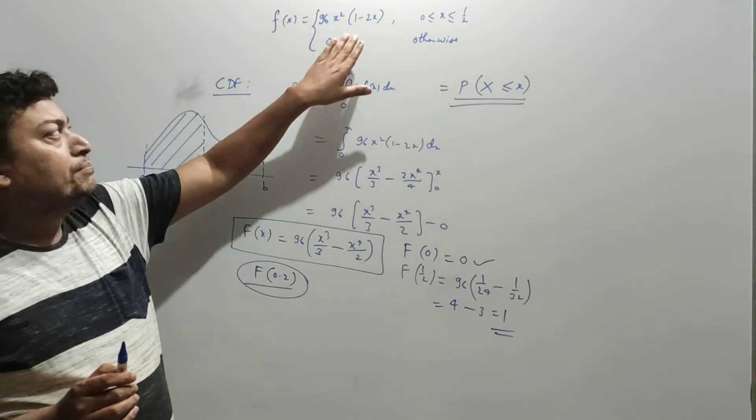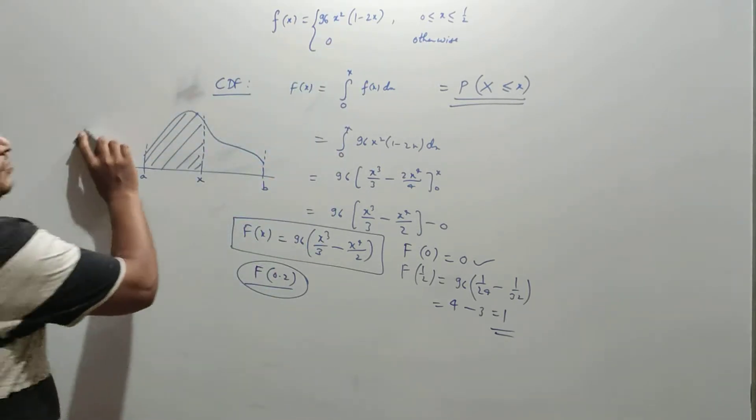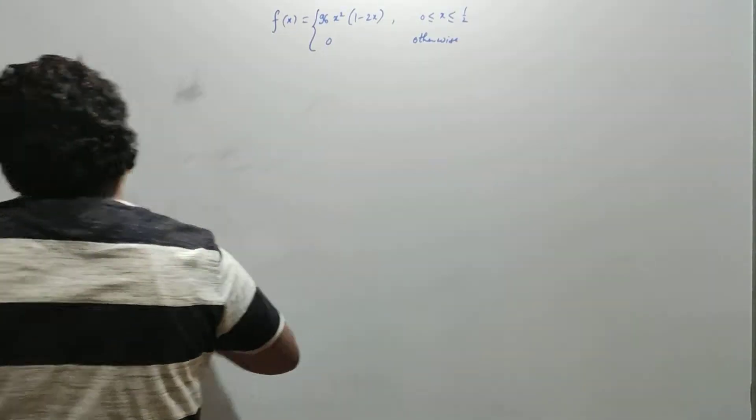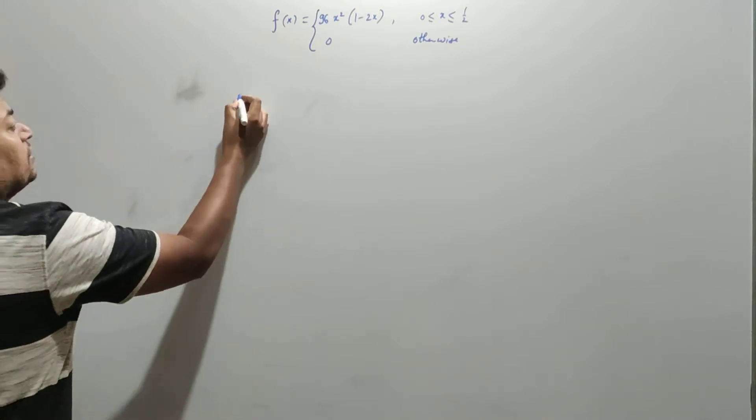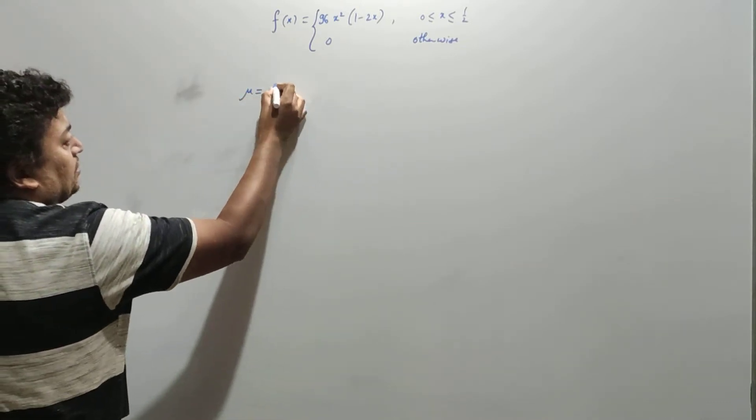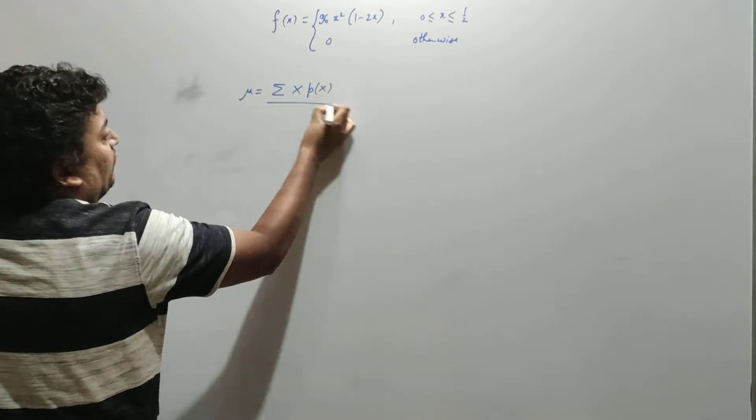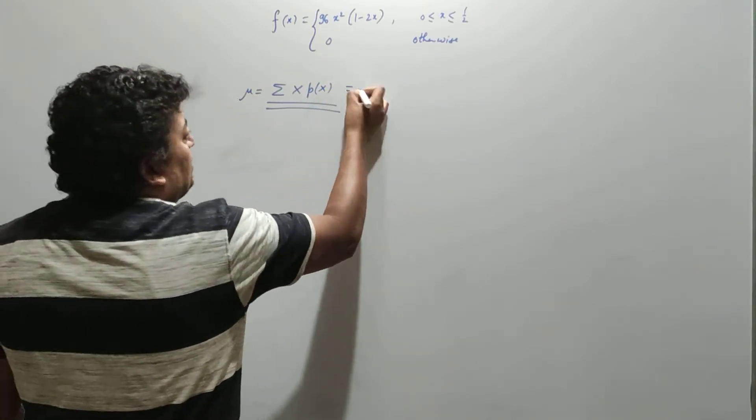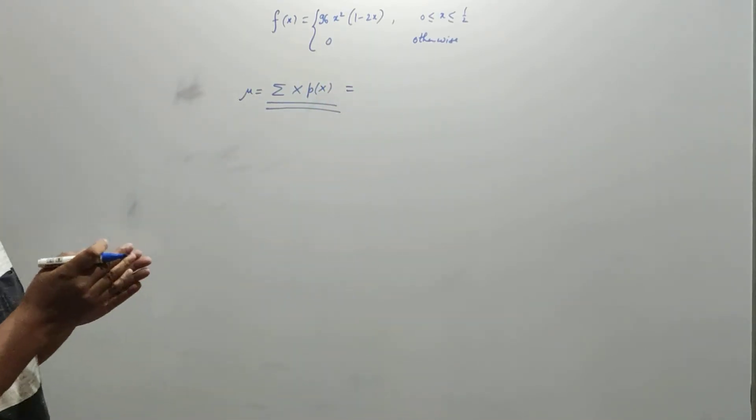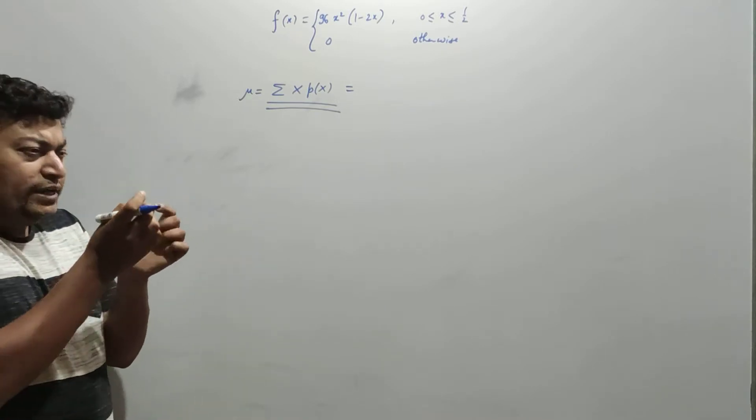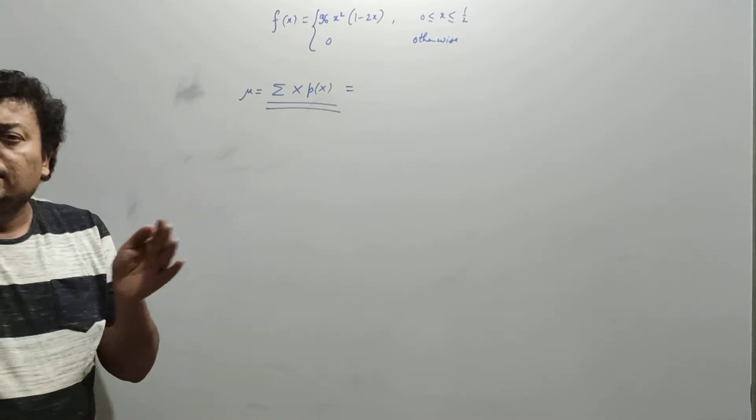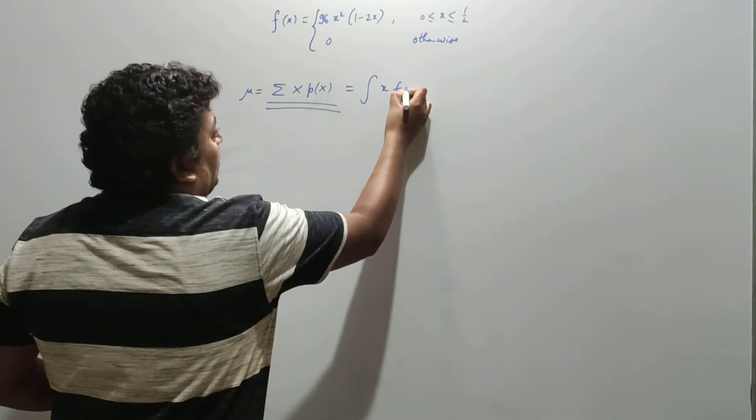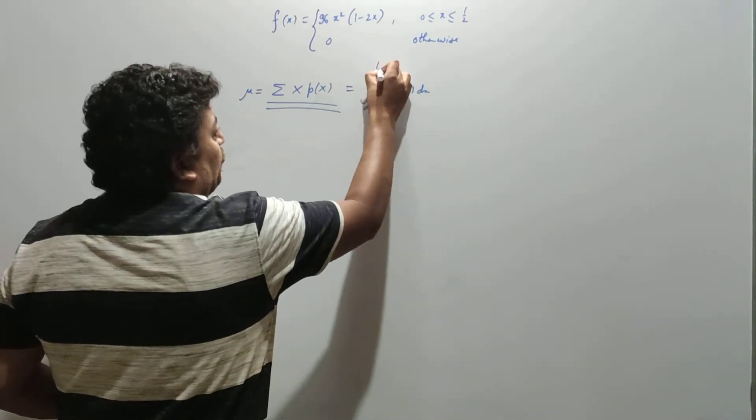Now we will understand how to find the mean. If you remember, mean was defined as summation of x·P(x) for discrete random variables. In this case, x values are infinite, so for each x value you find the P(x) value, and you keep adding—that will be an integration.